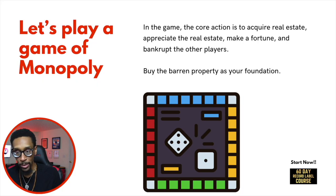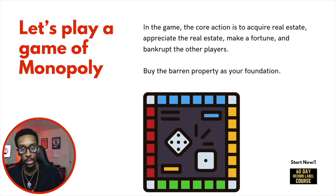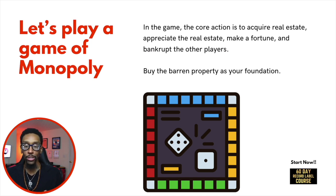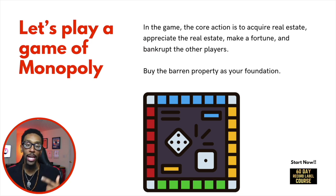Let's play a game of Monopoly. In the game, the core action is to acquire real estate, appreciate the real estate, make a fortune, and bankrupt the other players. Of course, you're not really bankrupting anybody — what you're doing is borrowing the market. You're going to help other players, then you're going to buy the baron property as your foundation, and you're going to do that first.